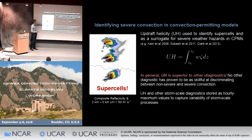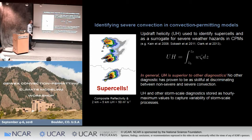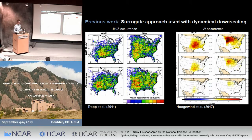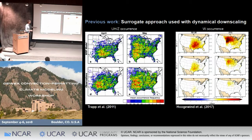The swaths here are the fields of updraft helicity integrated over a one-hour period. For many of these diagnostics, to capture the storm-scale variability that occurs from time step to time step within the model, the maximum value is saved over the course of an hour, and then used to make predictions of supercells. This diagnostic has been used by a handful of studies over the last decade in dynamical downscaling experiments. One of the first studies was from Jeff Trapp's group, who looked at updraft helicity and reflectivity combinations over a retrospective period of downscaled reanalyses, and compared the frequency of updraft helicity threshold exceedances to severe weather observations.